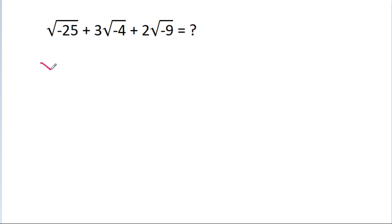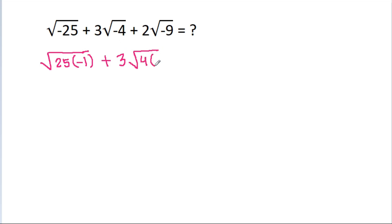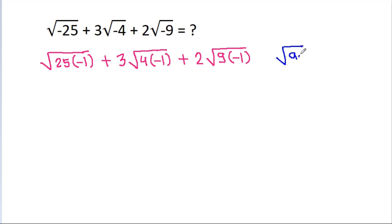So, square root of minus 25 is square root of 25 times minus 1, plus 3 times square root of 4 times minus 1, plus 2 times square root of 9 times minus 1. We use the property that square root of (a times b) equals square root of a times square root of b.